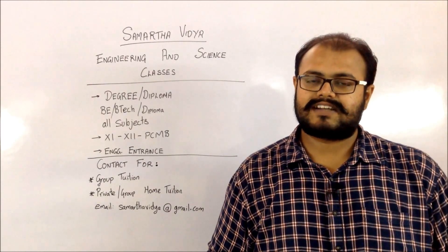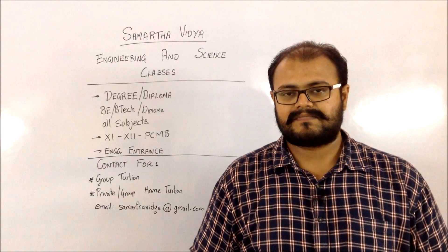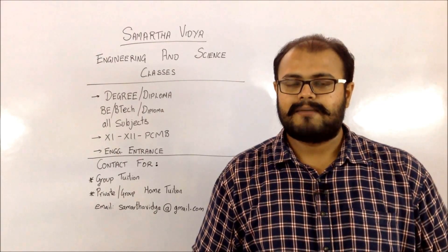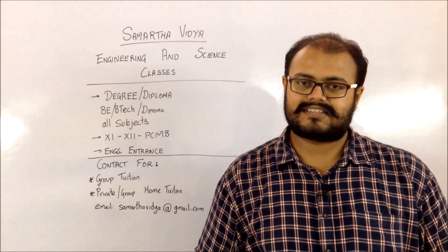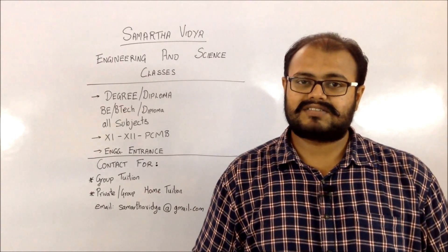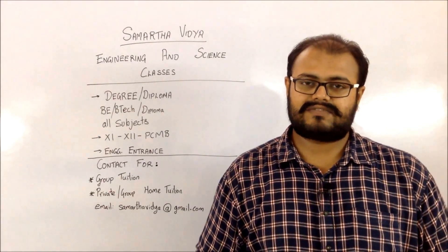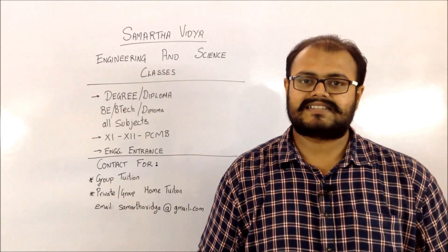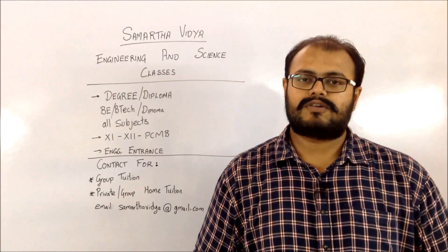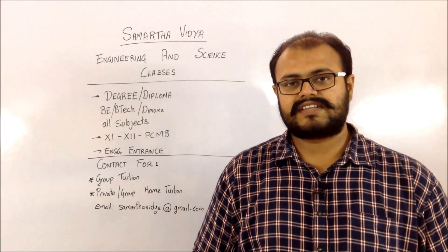From 23rd onwards, there will be the filling up of the option form, which is the most important form for CAP round one. People who want to apply via institute-level seats or who do not wish to apply via the CAP round can do so by visiting institutes and filling the required forms, but they must register at the nearest FC with required documents. This non-CAP round seat registration can be done till 10th of August. The option form filling for CAP round will run from 23rd to 26th of June.